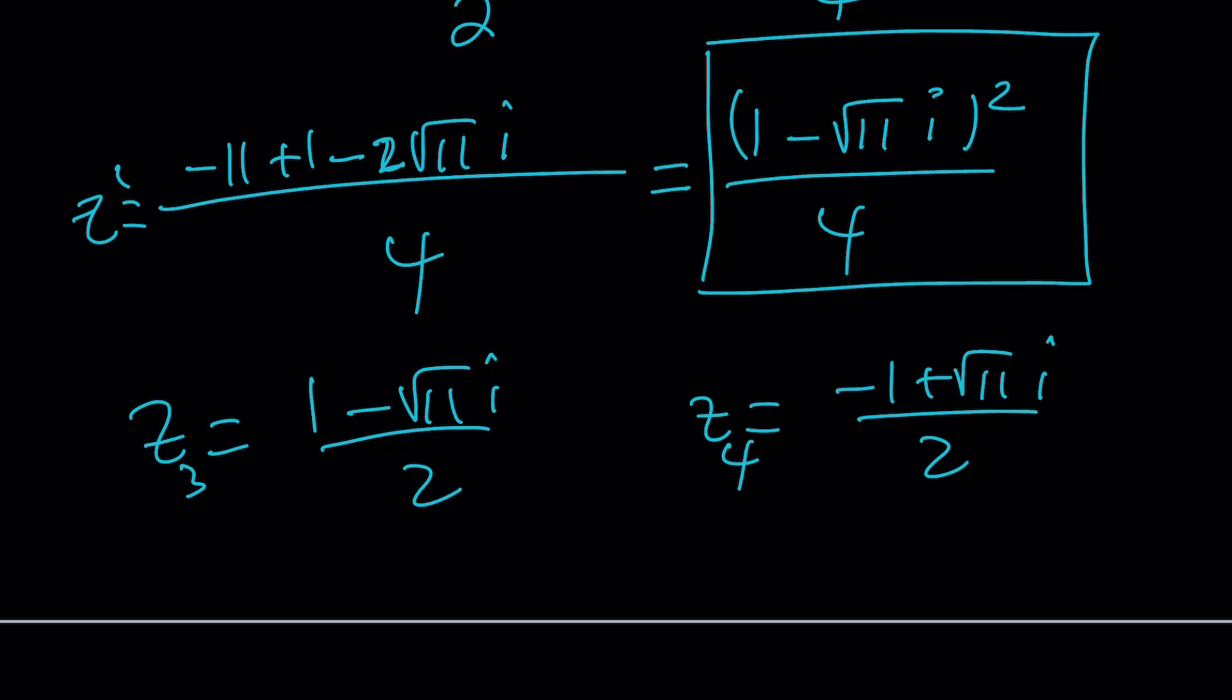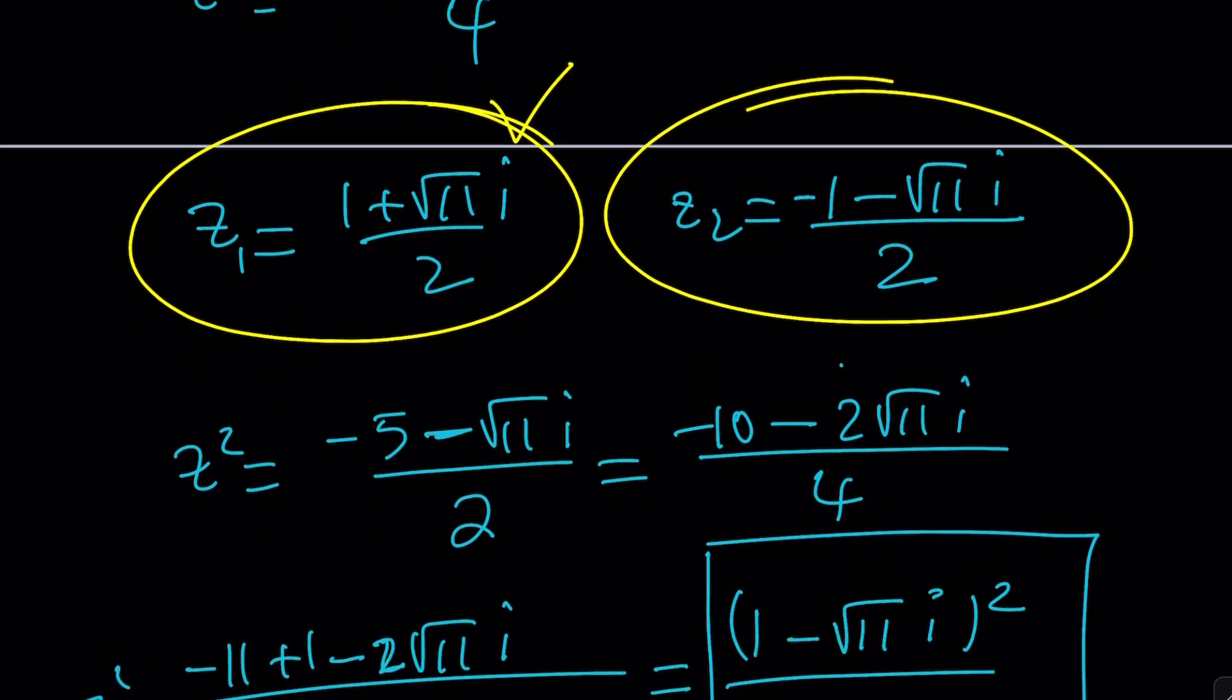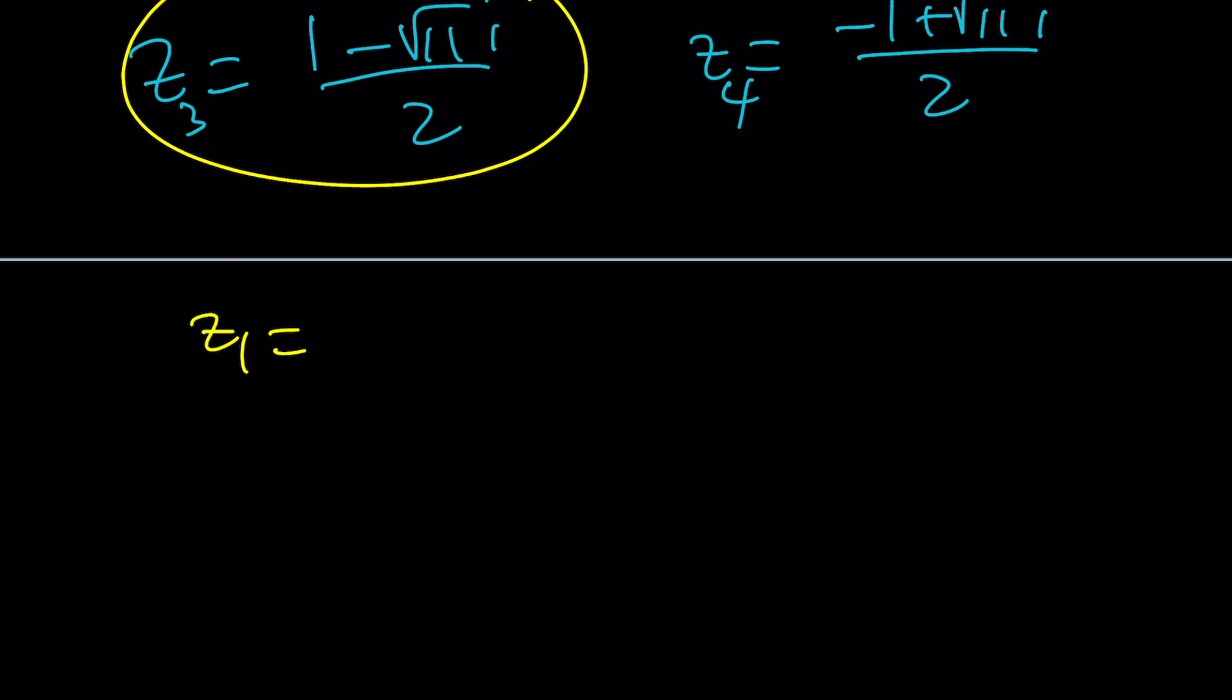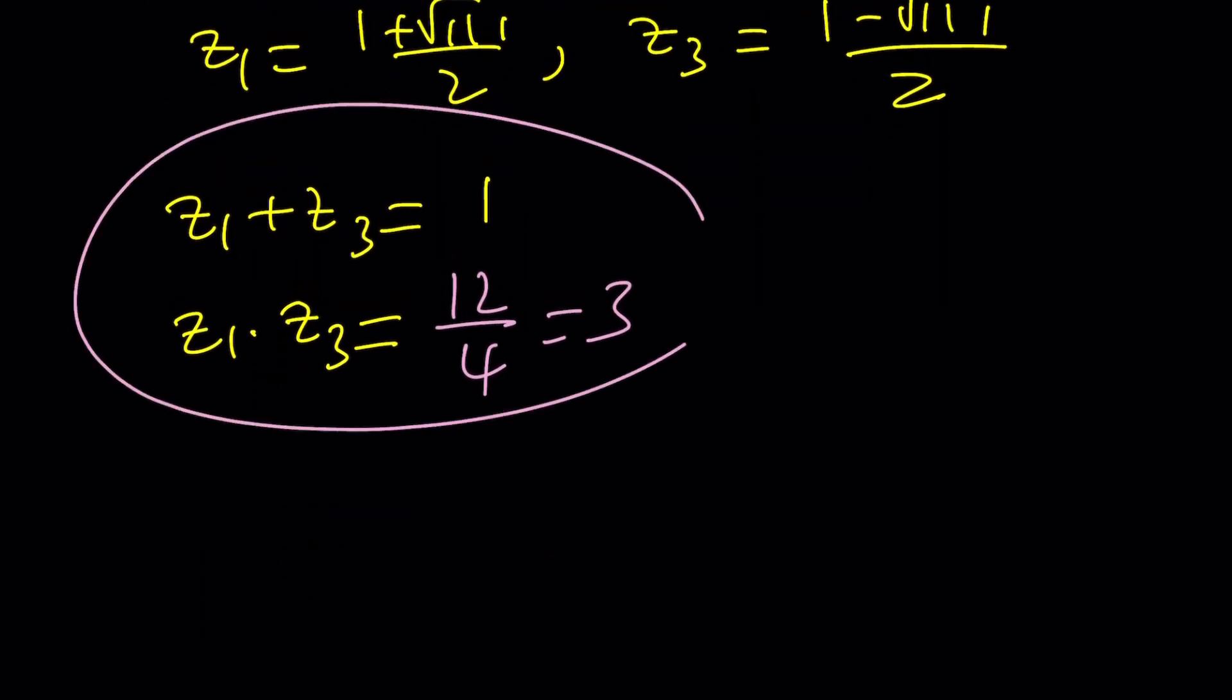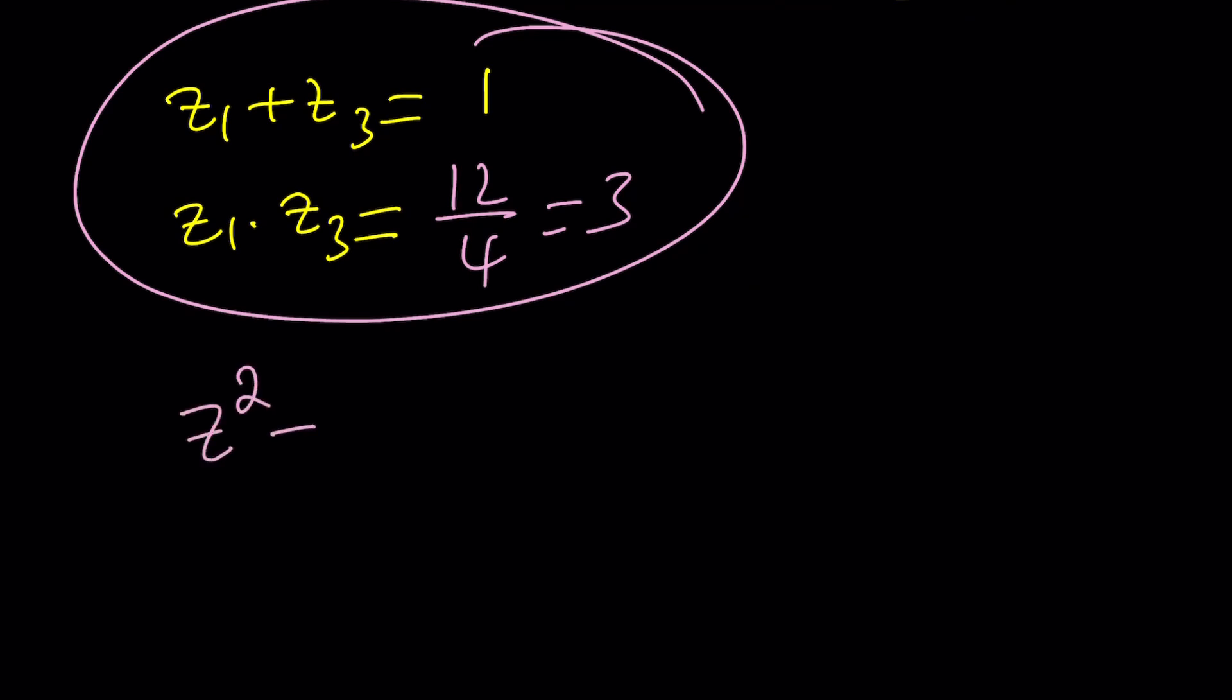Now I'm going to be a little picky here and pick z sub 1 and z sub 3. These two are conjugates. Notice that z sub 1 plus z sub 3 is 1, and z sub 1 times z sub 3 is 1 plus 11 divided by 4, which is 3. From Vieta's formulas, we have an equation whose sum of roots is 1 and whose product is 3. That gives us z squared minus z plus 3.